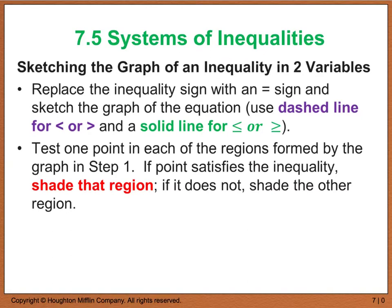When we sketch the graph of an inequality that has two variables — in other words, equations with both x and y — the first thing we want to do is replace our inequality sign with an equal sign and sketch the graph of the equation. Then we're going to change the line: use a dashed line for a strict less than or greater than symbol, or a solid line for less than or equal to or greater than or equal to.